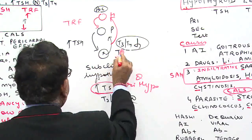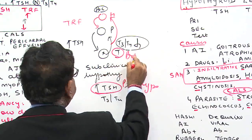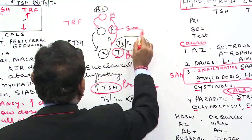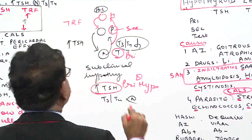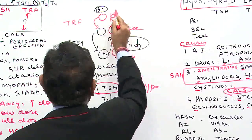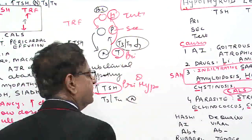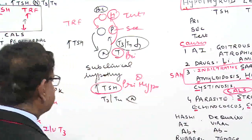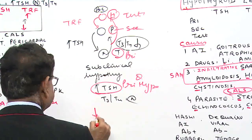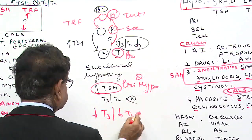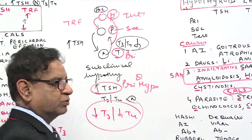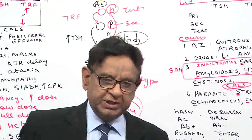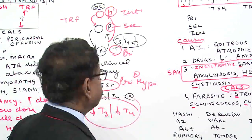If disease occurs at the thyroid level we call it primary hypothyroid; if disease occurs at the pituitary level, secondary hypothyroid; and if disease occurs at the hypothalamus, this is tertiary hypothyroid. In all three conditions T3 and T4 level is reduced — this is common to all. So how do we differentiate between the three: primary, secondary, and tertiary?